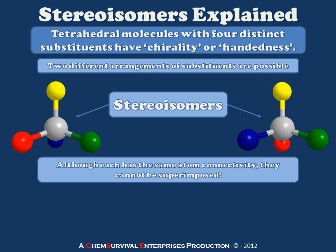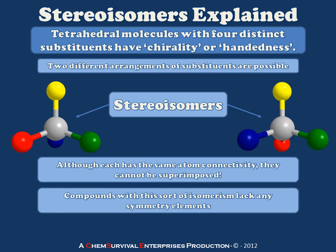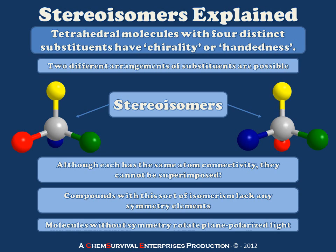When this happens, we call these two compounds stereoisomers of one another, keeping in mind that stereoisomerism is a relationship between two molecules. When a compound has this sort of property, both of the stereoisomers should lack any symmetry elements whatsoever — no mirror planes or inversion centers within the molecules. This gives them a property known as optical activity, or the ability to rotate plane polarized light. We'll talk more about this in another installment.